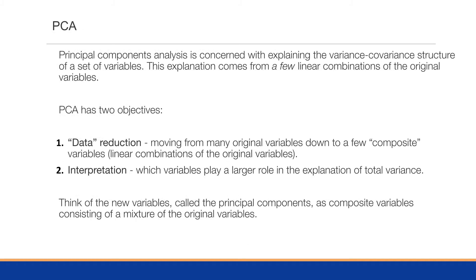Principal component analysis is concerned with explaining the variance-covariance structure of a set of variables, but this explanation comes from a few linear combinations of the original variables. What we're doing is creating new variables as linear combinations — a formula with coefficients — to represent the data. It has two primary objectives: number one is data reduction, moving from many original variables like 40 down to a few composite variables, say three.